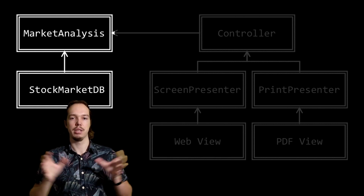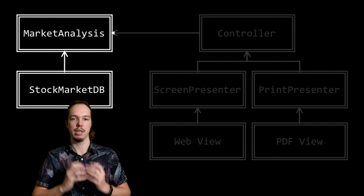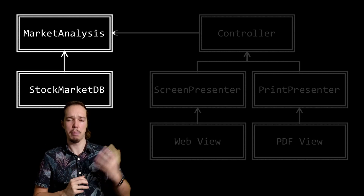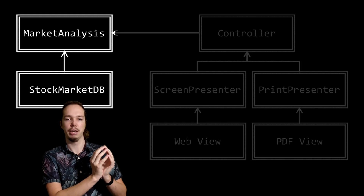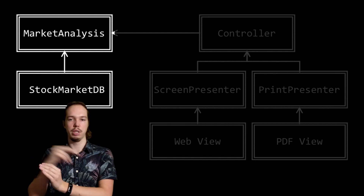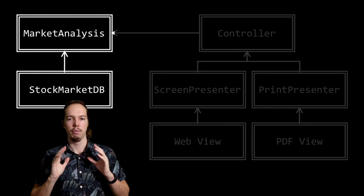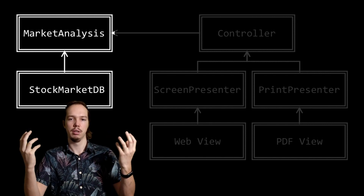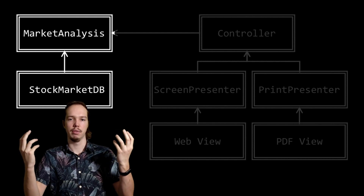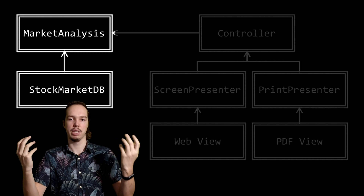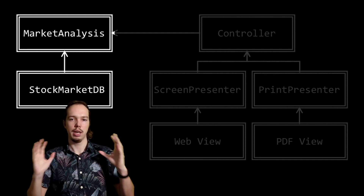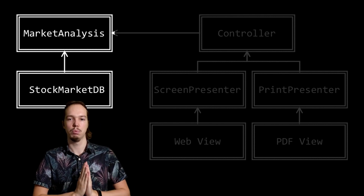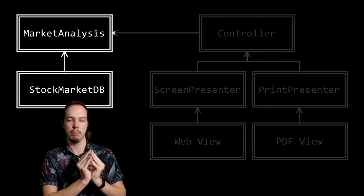We see that the stock market database component actually depends on the market analysis algorithms — there's an arrow going from stock market database to market analysis. This might seem strange because the market analysis algorithms use data from the stock market database, yet the arrow points the other way. This is not a mistake — we designed the dependency to be in this direction on purpose. If component A depends on component B, any change in B might impact A, whereas changes in A will not impact B.